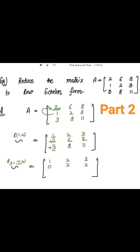Similarly, I need 0 in the third row. Multiply the first row by negative 3: multiplying 1 by negative 3 and adding to 3 gives 0. Multiplying 2 by negative 3 gives minus 6, and adding with 8 gives 2. So the third row entry is also 2. Now in the second row I have 2.